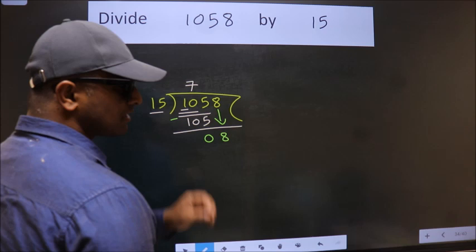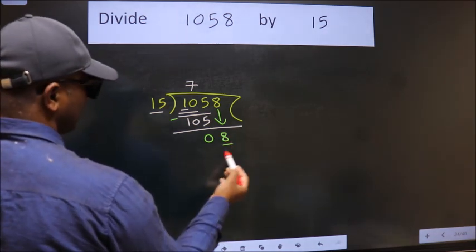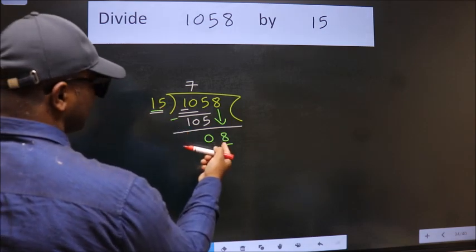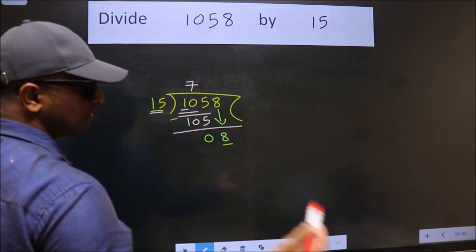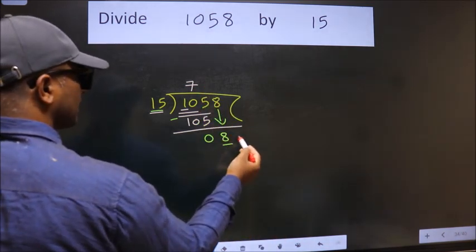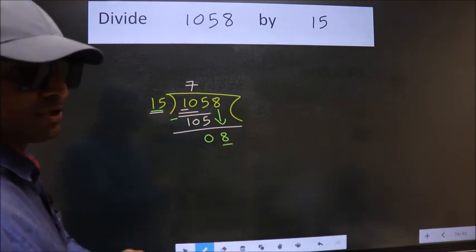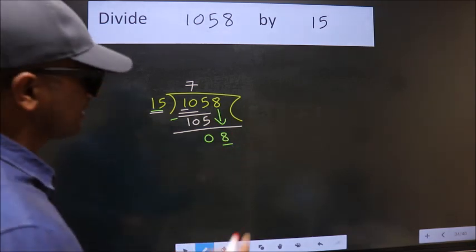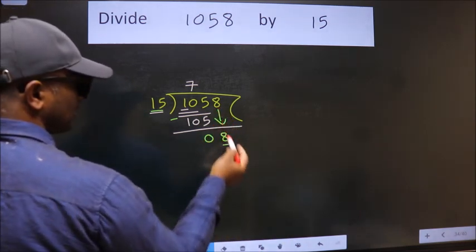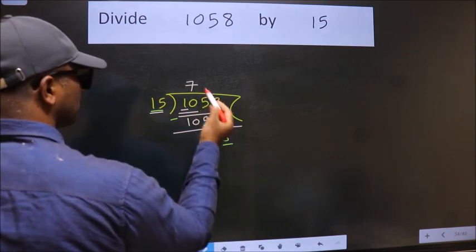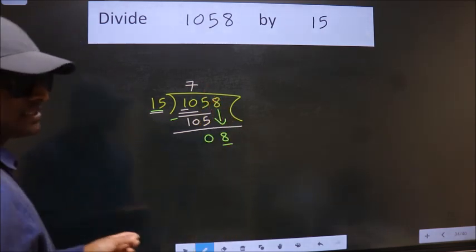Here we have 8. Here 15. 8 is smaller than 15. So what many do is they directly put dot, take 0, which is wrong. Why is it wrong? Because just now you brought this number down and in the same step, you want to put dot, take 0, which is wrong.